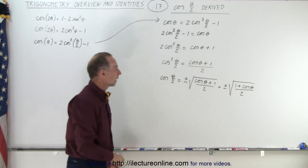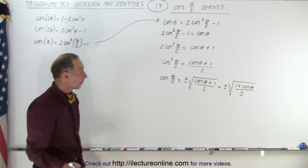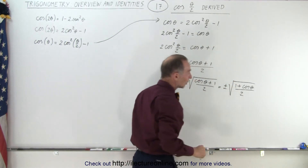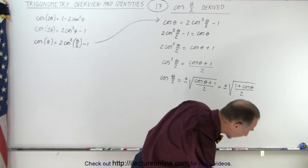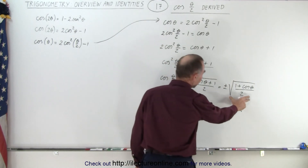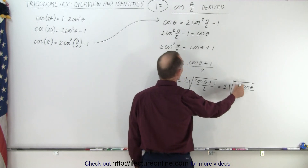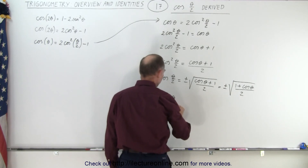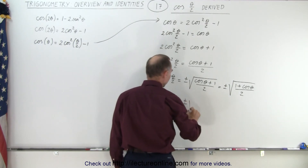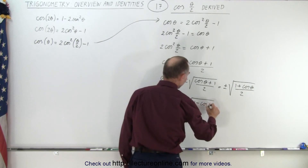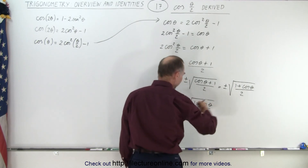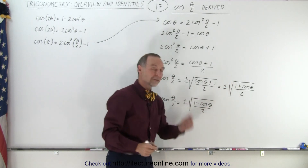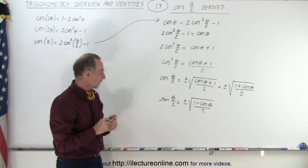Either way, it is the same. The only difference is that you have a minus for the sine of theta over 2 and a plus for the cosine of theta over 2. So the sine of theta over 2 is equal to plus or minus the square root of 1 minus the cosine of theta, divided by 2. As you can see, the similarity between those two forms: with the cosine you get a plus, and with the sine you get a minus. That helps memorize it a little bit easier.